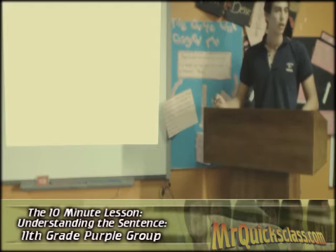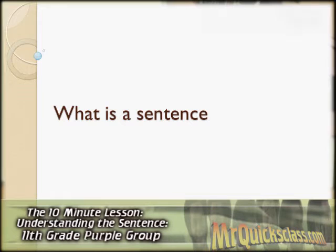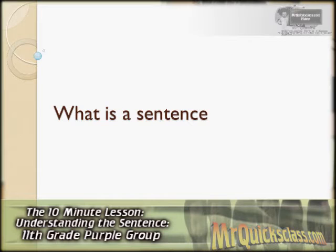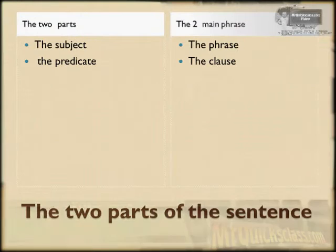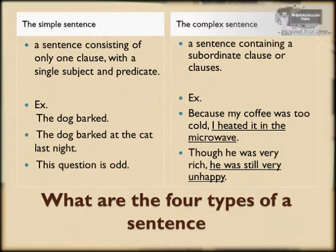Good morning, grade 11. I'm the presenter for the paper group. I will discuss a lot of issues right now. We're going to start by: what is a sentence? A sentence has two parts. The first part is the subject. The second part is the predicate. And the two main phrases are the phrase and the clause.